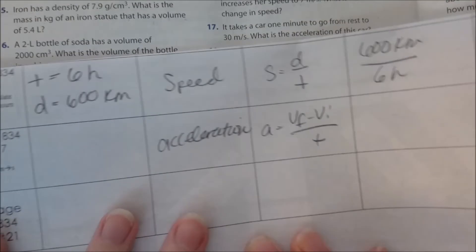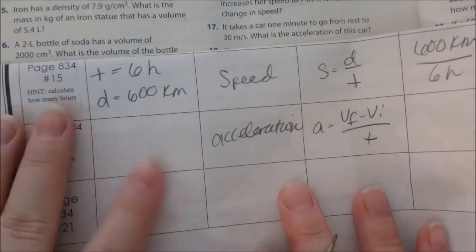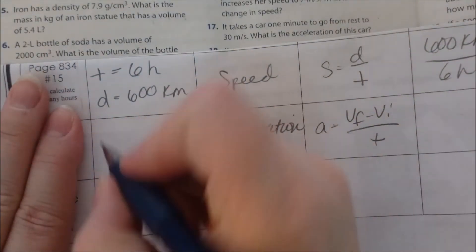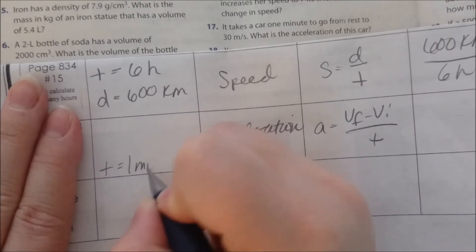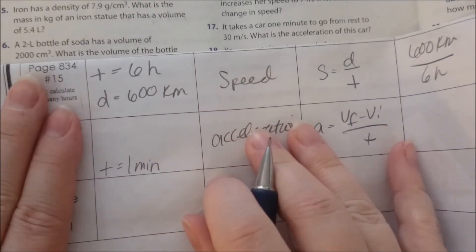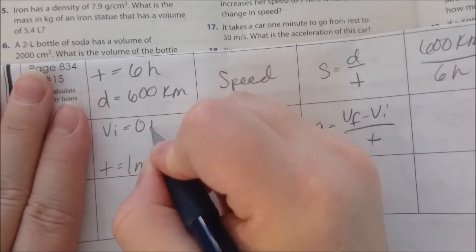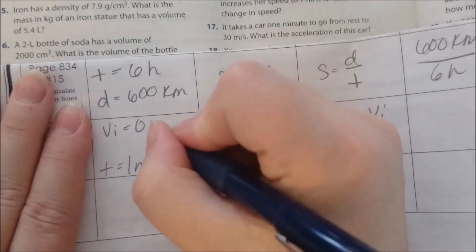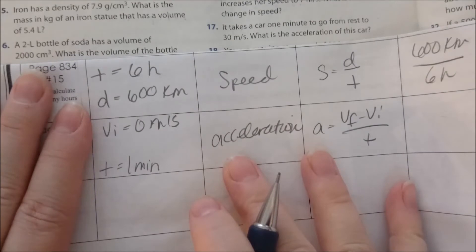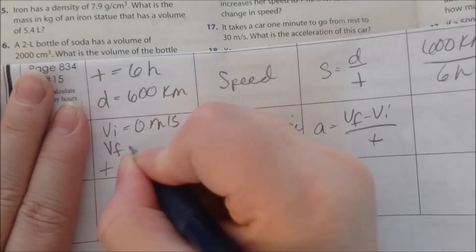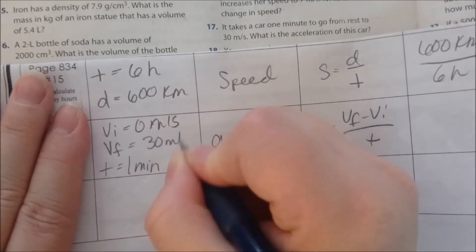So I need VF, VI, and T. It takes the car one minute, so the time is one minute. The car is going from rest, so the VI is zero. And the car is going to 30 meters per second.